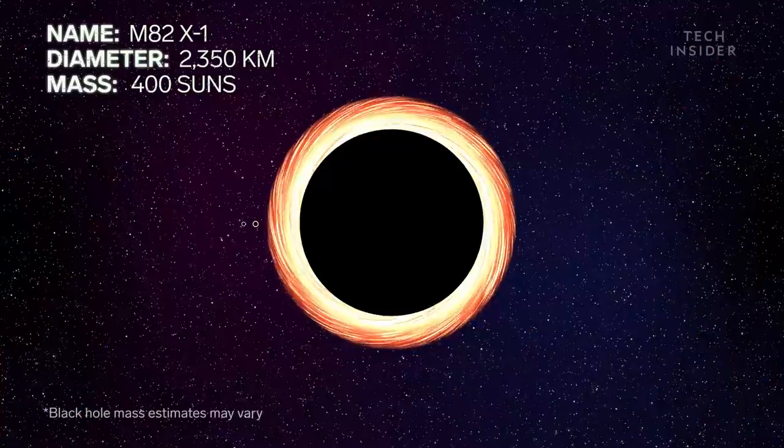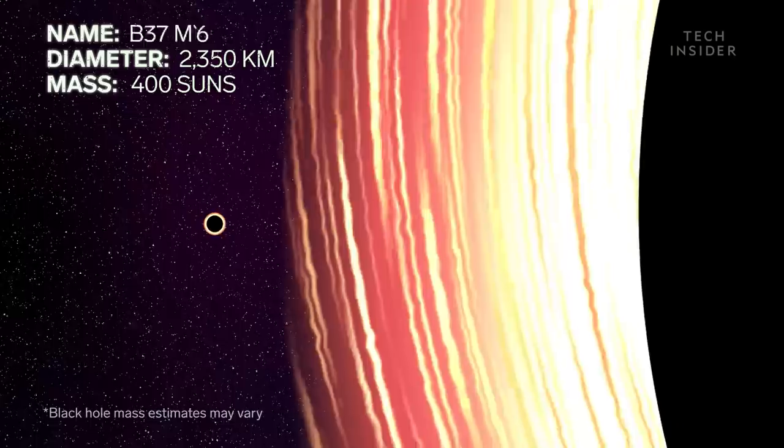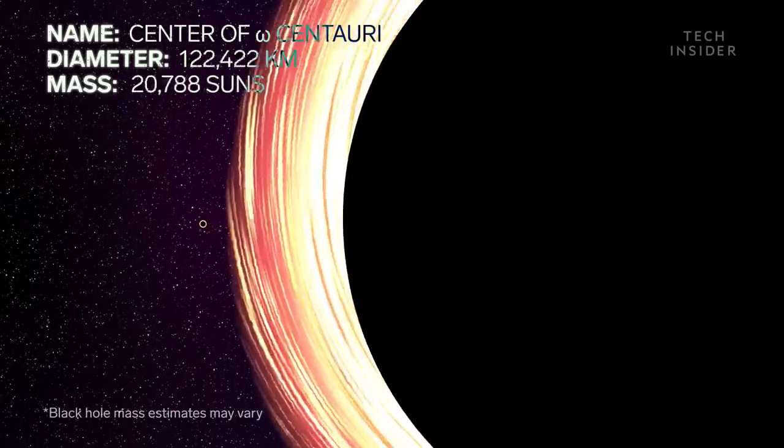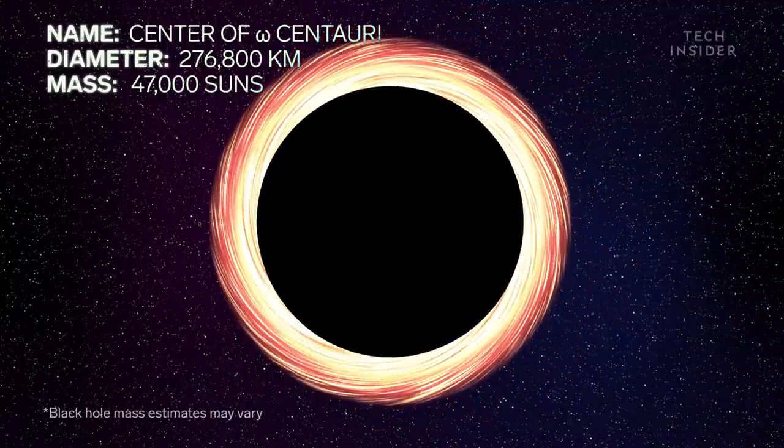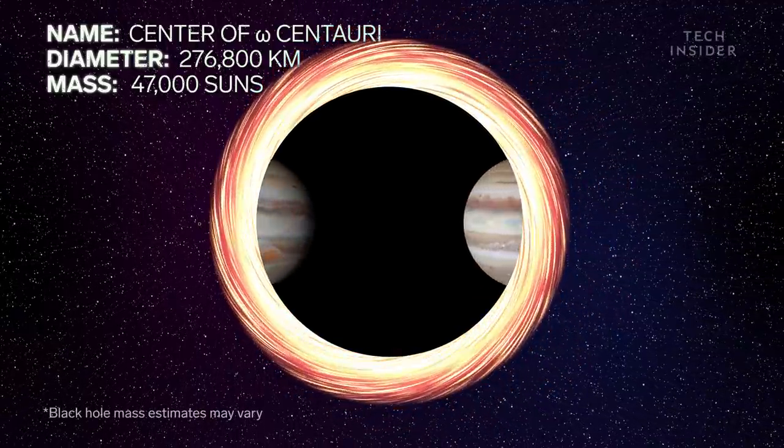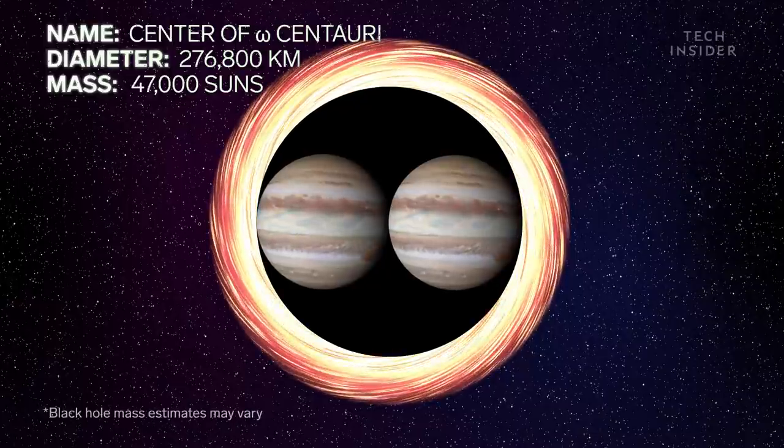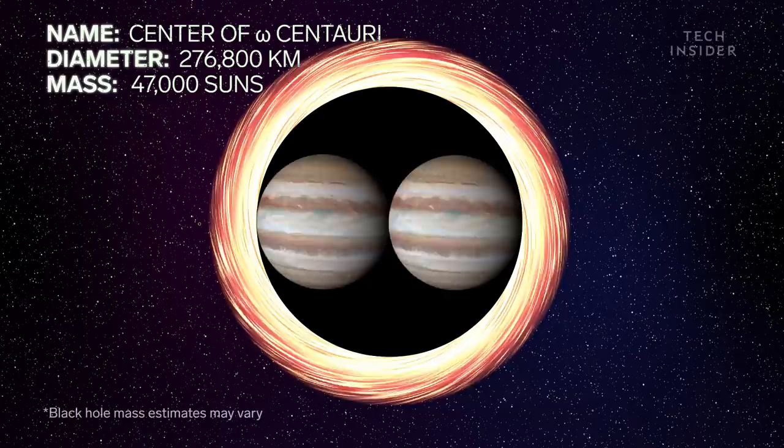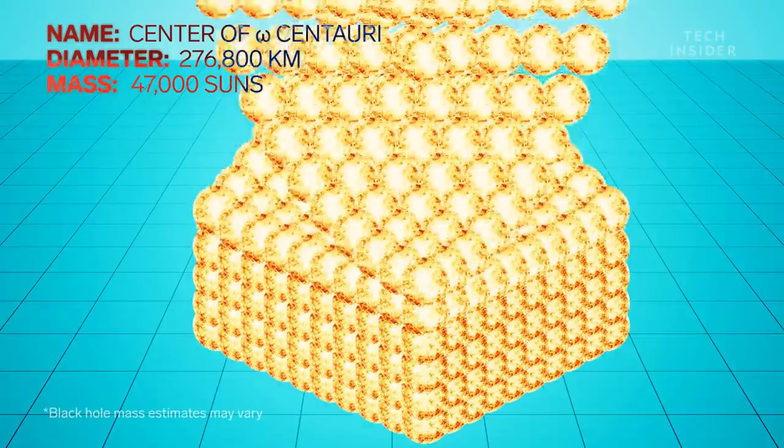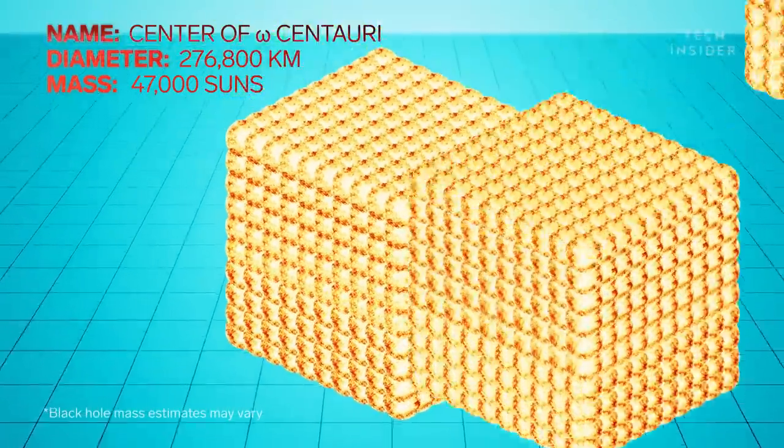At this point, black holes start to get pretty big compared to Earth. But it's still nothing when you consider the sheer mass they carry. Take this black hole, for example. It's nearly twice the size of Jupiter, spanning a region about 172,000 miles wide. But inside is as much mass as 47,000 suns.